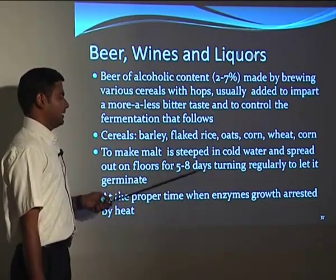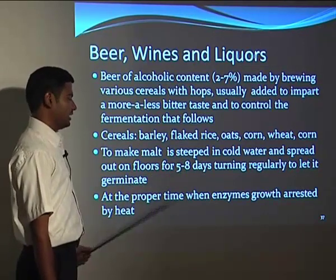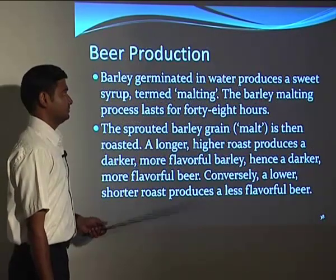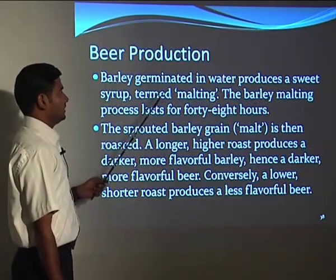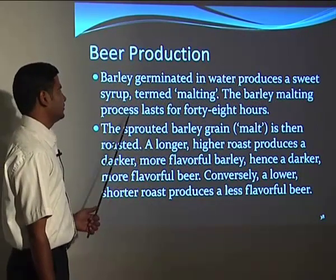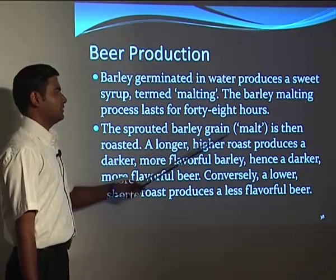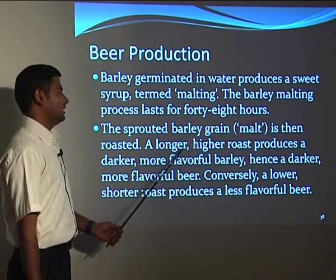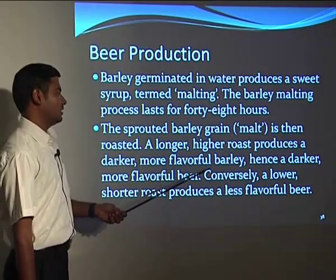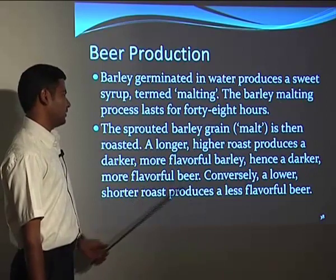The grains are taken, allowed to germinate, and at the desired stage of germination, the process is arrested by heating. Barley germinated in water produces a sweet syrup termed malting, and the barley malting process lasts for 48 hours. The sprouted barley grain — the malt — is then roasted: a longer, higher roast produces a darker, more flavorful barley and hence a darker, more flavorful beer.